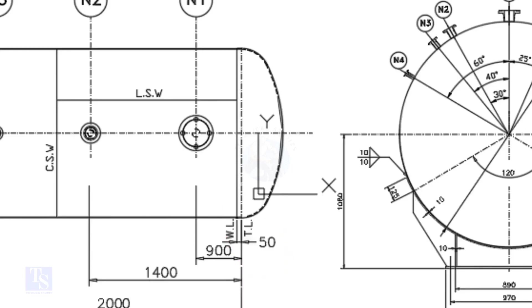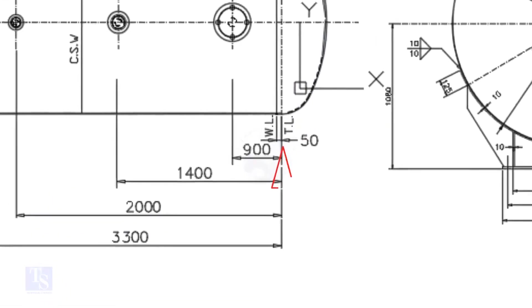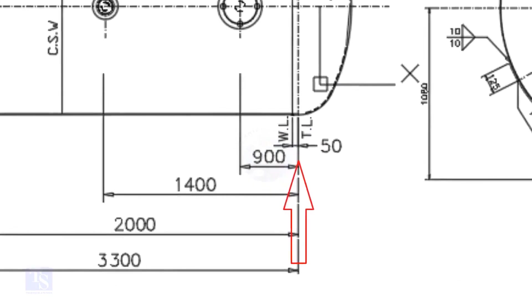In this drawing, the nozzle center distance is starting from the TL. In some drawings, you may see the nozzle center is given from the WL, so before starting the marking, carefully see these things.